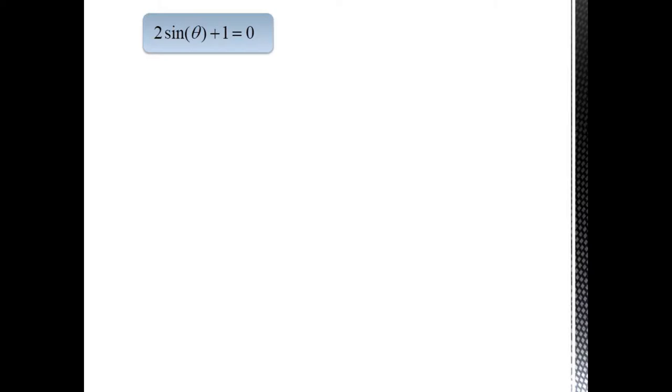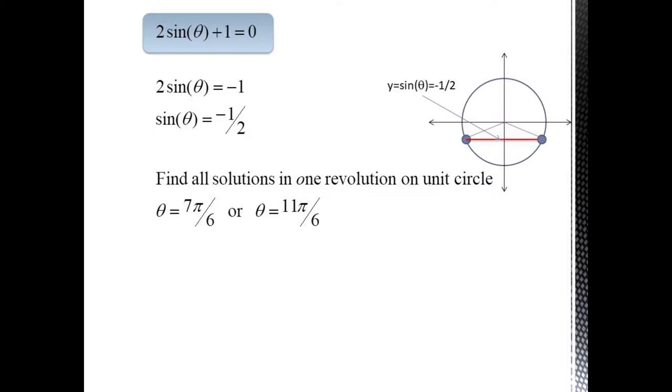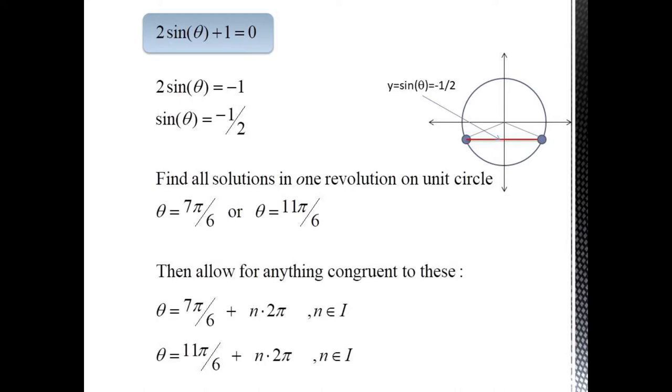Now suppose instead we had 2 sine theta plus 1 equals 0. We can solve this easily enough for sine theta and get sine theta equals minus 1 half. Since sine corresponds to our y value, we see from the unit circle that there are 2 distinct solutions having a reference angle of pi over 6. Hence theta equals 7 pi over 6 or theta equals 11 pi over 6.